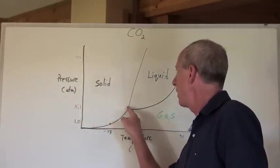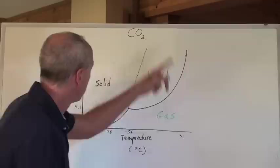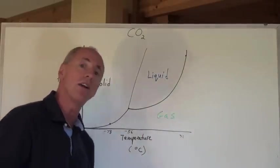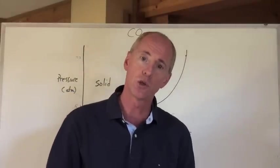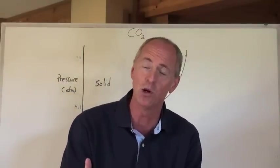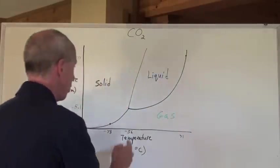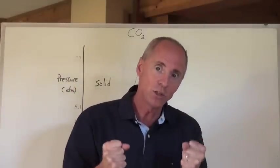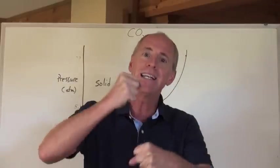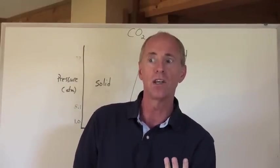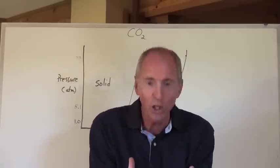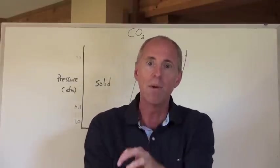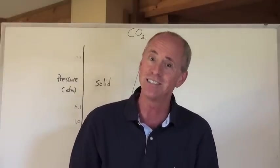Continuing to warm the CO₂ at 5.1 atmospheres, we reach a point on the diagram where solid, liquid, and gaseous phases all intersect. That point is called the triple point. For CO₂, the triple point occurs at minus 56 degrees Celsius and 5.1 atmospheres. At that temperature and pressure, CO₂ exists in complete equilibrium in all three states — solid, liquid, and gas — simultaneously interchanging among themselves in an enclosed sample.